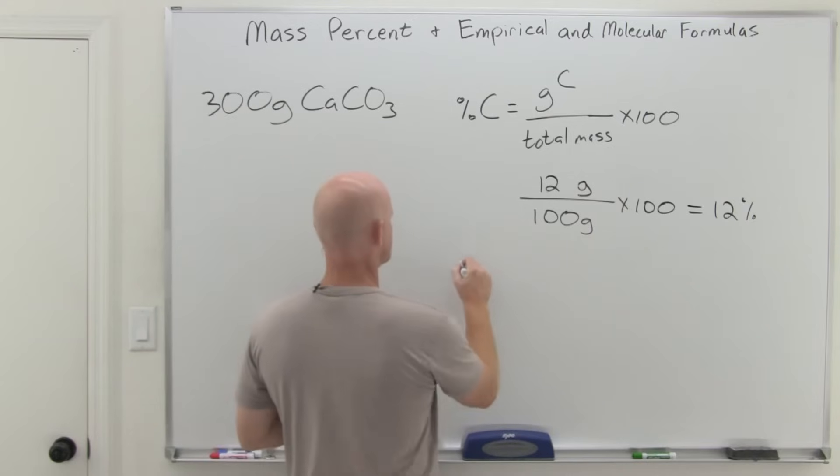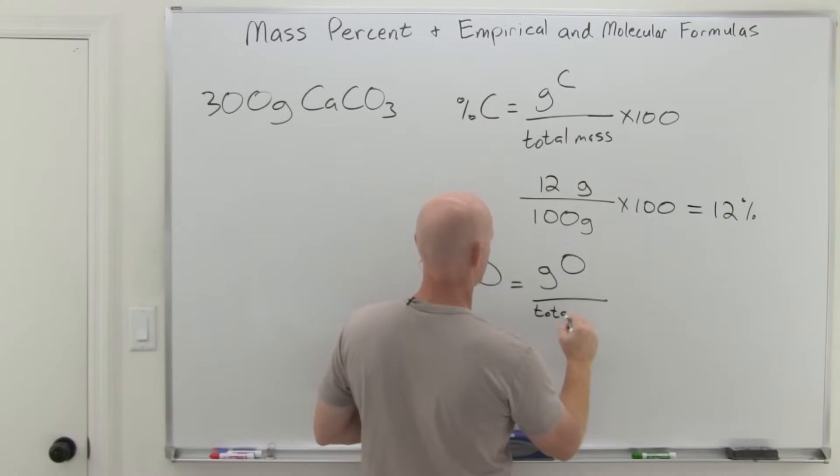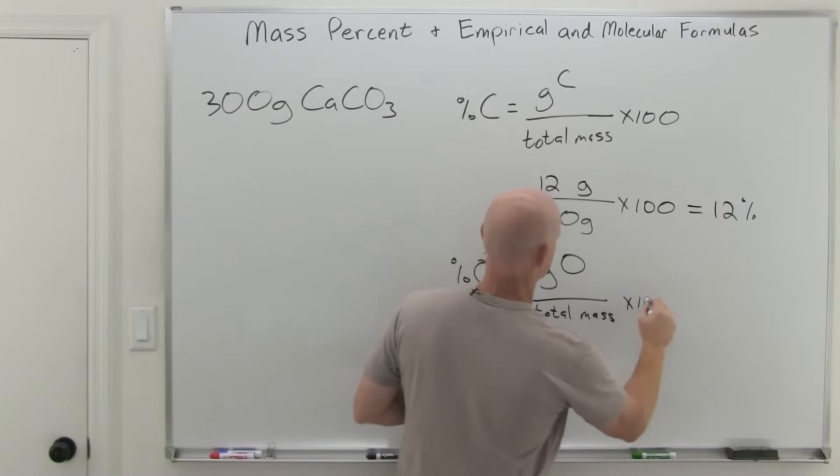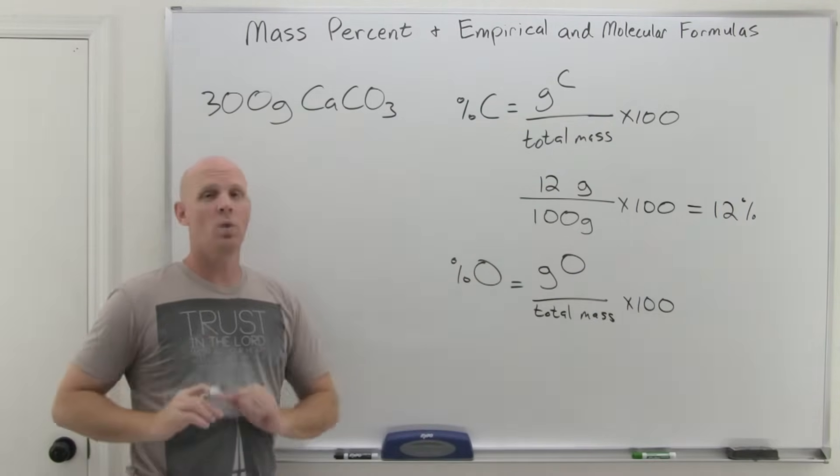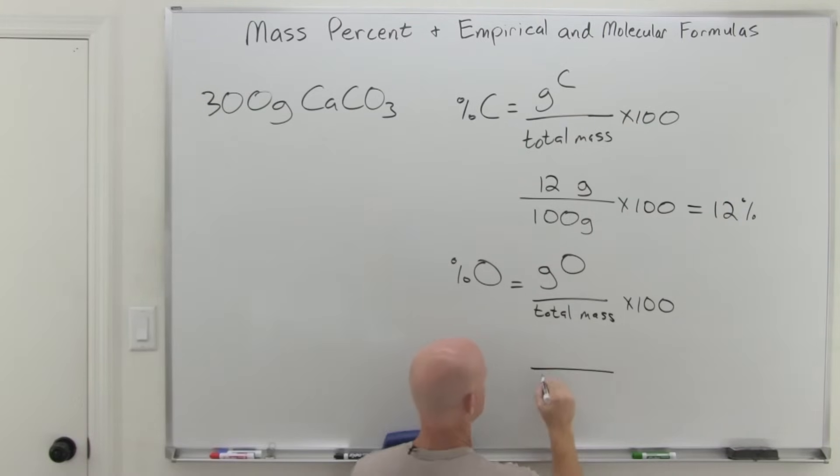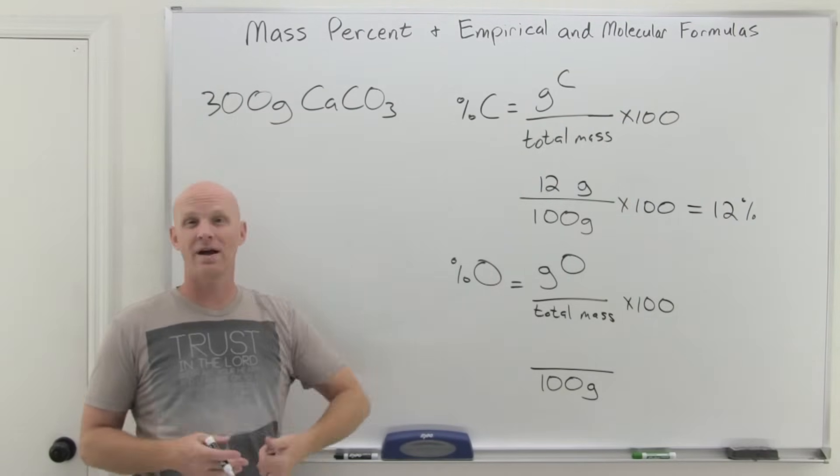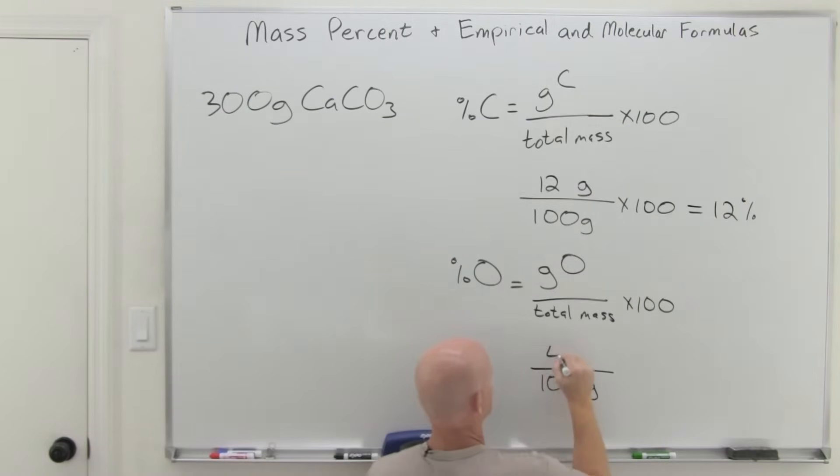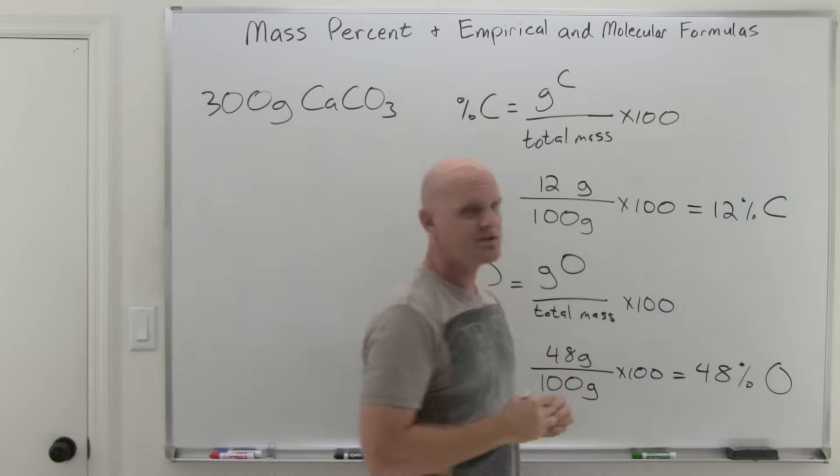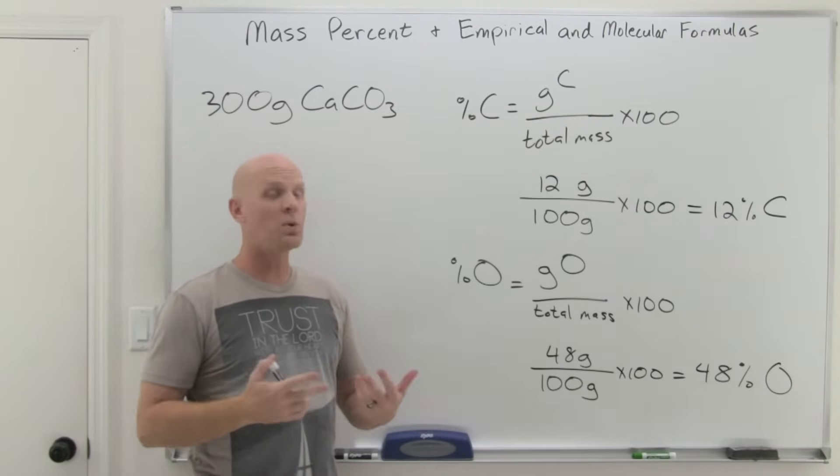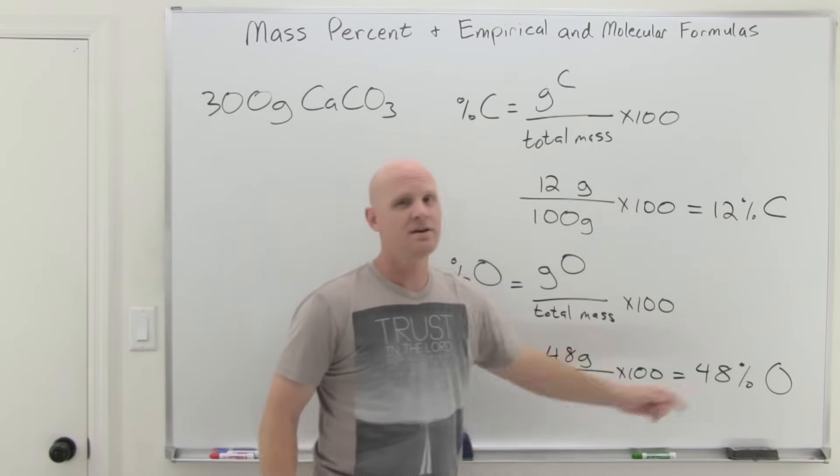Now we want to find that percent oxygen as well. Same general property—grams of oxygen over total mass times 100. We'll take advantage of the fact that we're going to use that 1 mole sample size, so that total mass is once again going to be 100 grams for calcium carbonate. But in 1 mole of calcium carbonate, there's not just 1 mole like there was with carbon, there's 3 moles of oxygen. And if each mole of oxygen weighs 16 grams, then 3 moles is going to weigh a total of 48 grams. Times 100, and we get 48%. So 12% carbon, 48% oxygen, and we could deduce that the rest is calcium, so it had to be a total of 40% calcium.